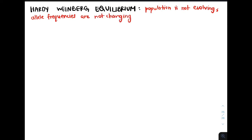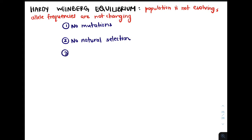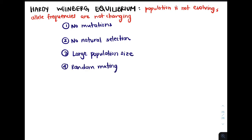There are five key assumptions of the Hardy-Weinberg equilibrium: no mutations, no natural selection, a large population size, random mating, and no gene flow or no migration.